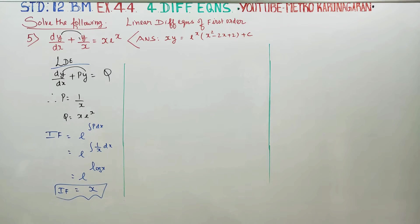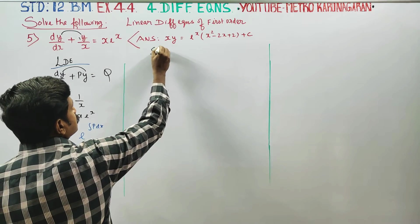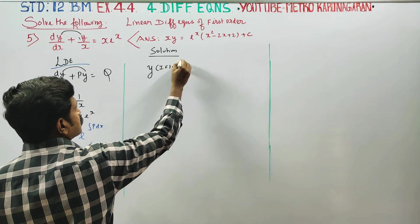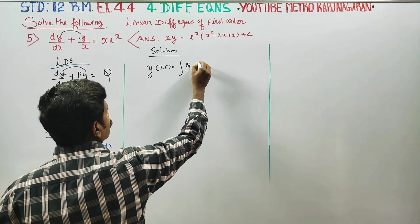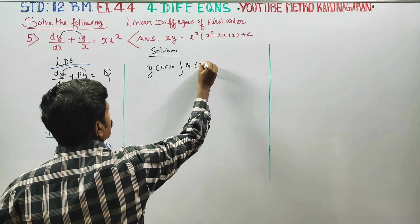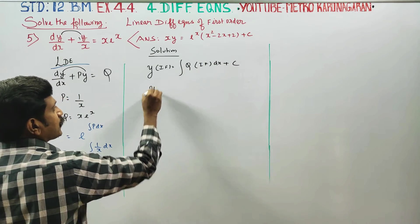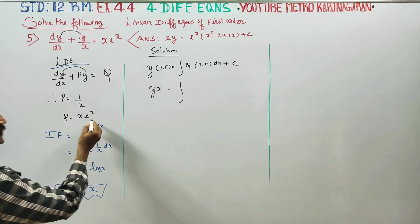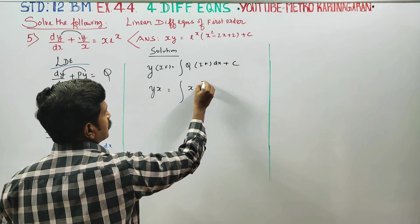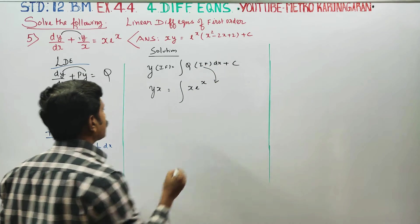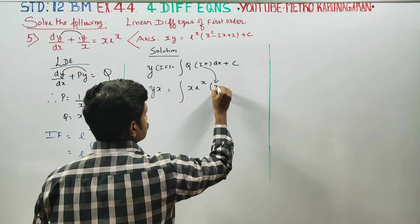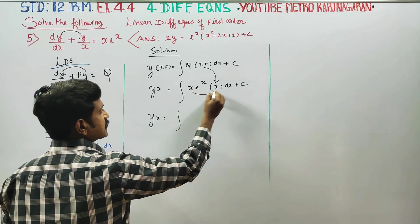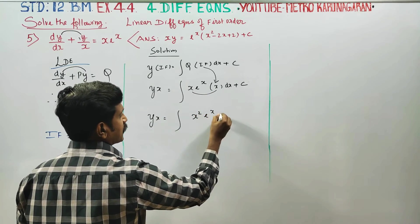Now the integrating factor is ready. Entering directly to the solution: the solution formula for a linear differential equation is y into integrating factor equals integration of Q into integrating factor dx plus C. So y times x equals integration of x squared e power x dx plus C.